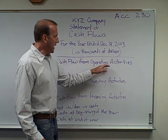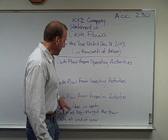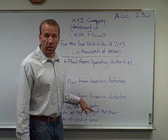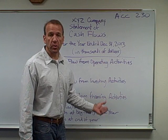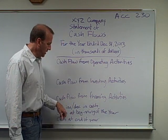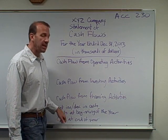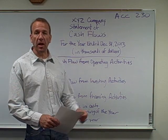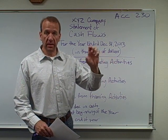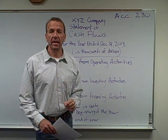Once we have all of our activities and dollar amounts, we total them up. It's either going to be a net increase or a net decrease in cash once you add up all the cash transactions taking place in the company. We then look at the beginning cash balance — what was our cash balance at the beginning of the year — then add or subtract the net increase or decrease, and that gives us our ending cash balance.